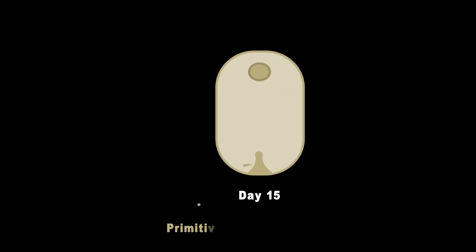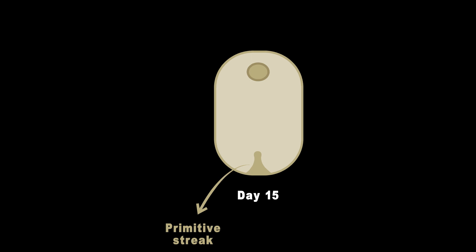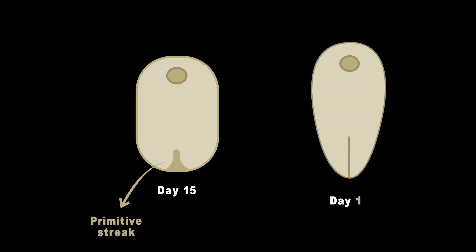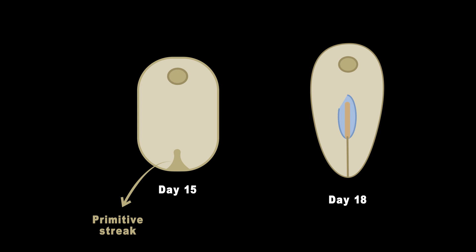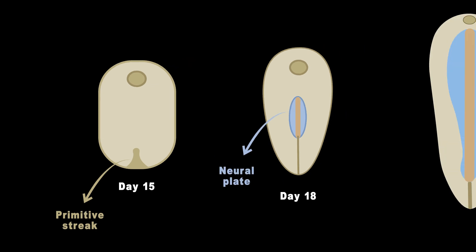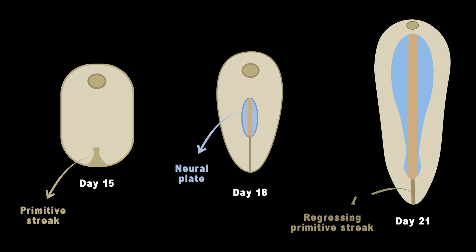The embryo's posterior-anterior axis is determined by a variety of molecules, and a structure called the primitive streak forms at the posterior side. As development progresses, the primitive streak regresses and disappears.